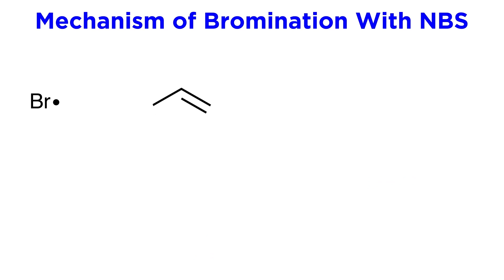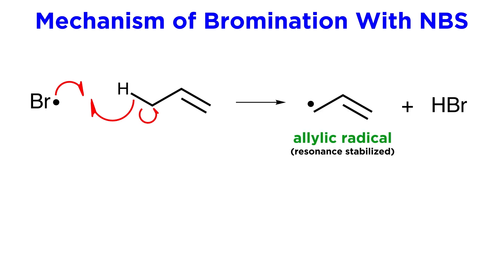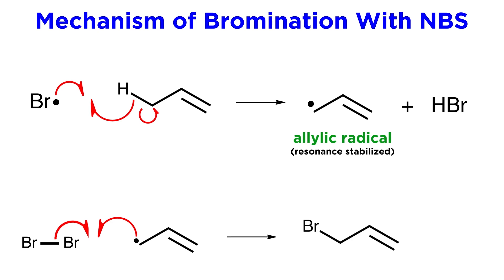Now let's allow this to interact with an allylic substrate. The bromine radical can interact with the hydrogen at the allylic position, generating HBr and producing this allylic radical. This is a favorable position for radical formation because it is resonance stabilized by this pi bond, just the way an allylic cation would be resonance stabilized, as the electron deficiency can be delocalized. Then when the allylic radical encounters a bromine molecule, one of the bromine atoms can interact with the radical to form a new carbon-bromine bond, and we will propagate another bromine radical.